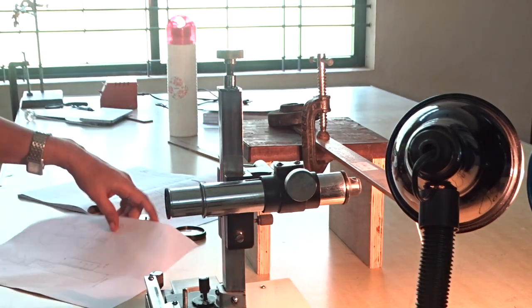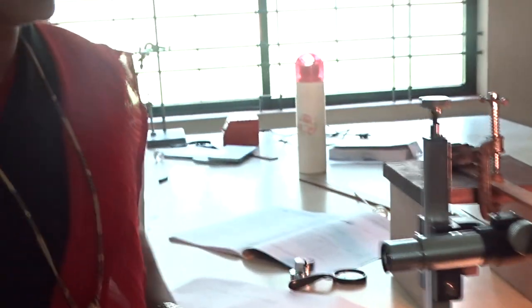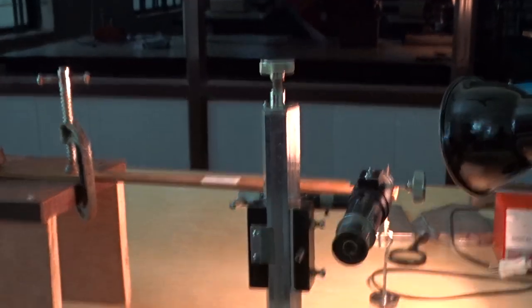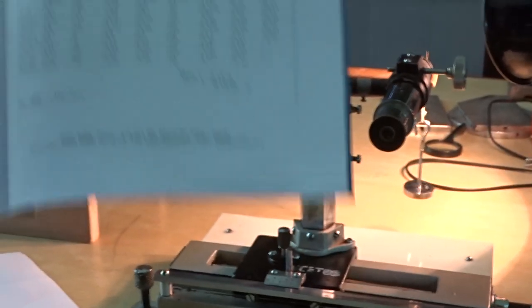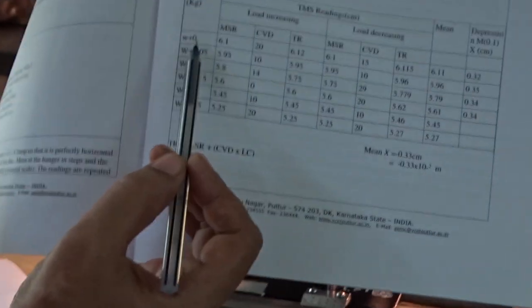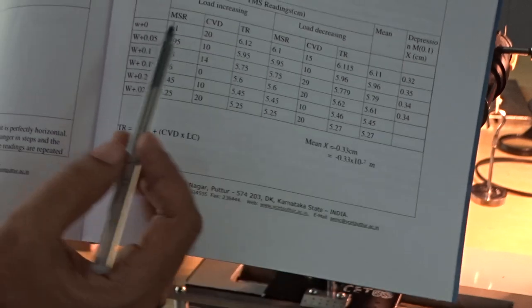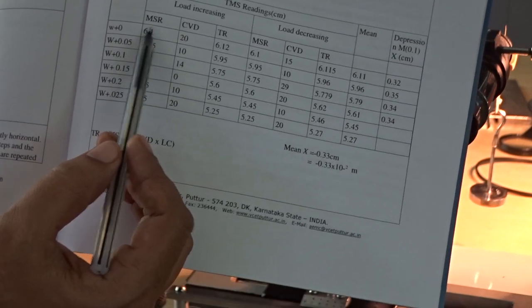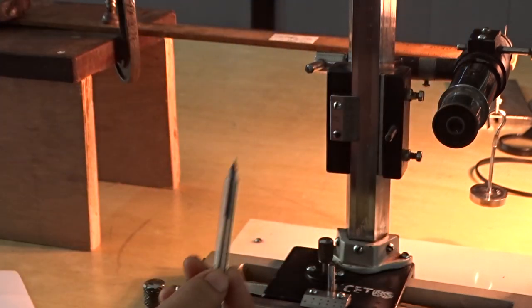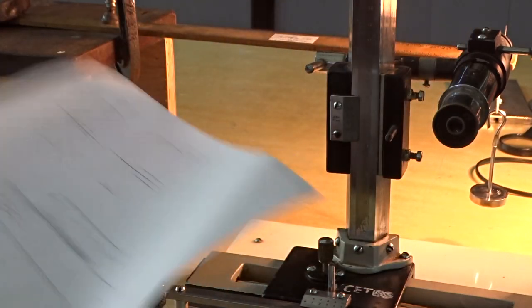So, now about the reading. Initial adjustment over. Now, about the reading. We have taken one weight hanger. Weight of that weight hanger is W. See this table log column. W plus 0. First reading is W plus 0. I have not taken any slotted weight in that. We will write MSR and CVD.